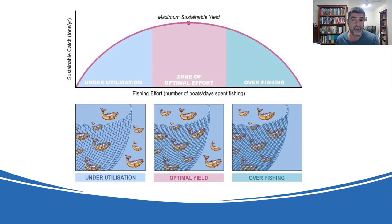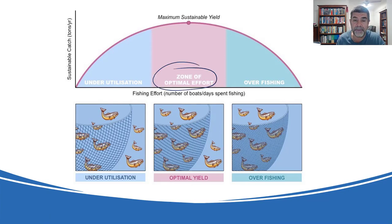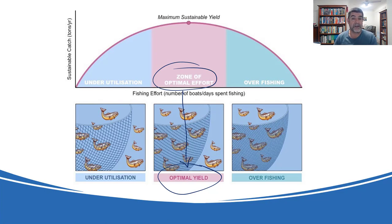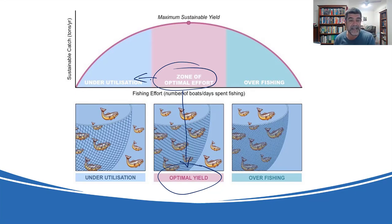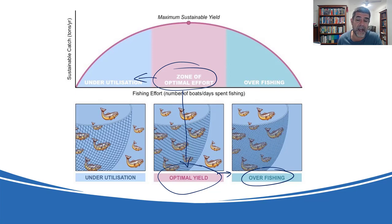If you want to continue to harvest natural resources, you need to manage them in such a way that you ensure you can keep coming back over and over again. There's going to be a zone of optimal effort corresponding to an optimum yield — the biggest yield you can possibly get whilst maintaining sustainability in the numbers of your resource. Below that it becomes pointless because you're not collecting enough. Beyond that, we reach the over-harvesting problem, and once that happens, we're not leaving enough individuals to replenish the stocks.